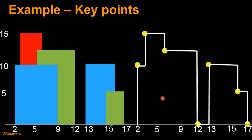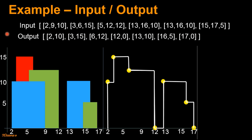With these ideas in place, let's look at the expected input and expected output for this problem. In the input array, every array — for example [2, 9, 10], [3, 6, 15] and so on — describes the position of a building and its height. So [2, 9, 10] indicates that the blue building starts from 2, ends at 9, and has a height of 10. Similarly, [3, 6, 15] indicates that the red building starts from x=3, ends at x=6, and has a height of 15. The same applies for all other arrays.